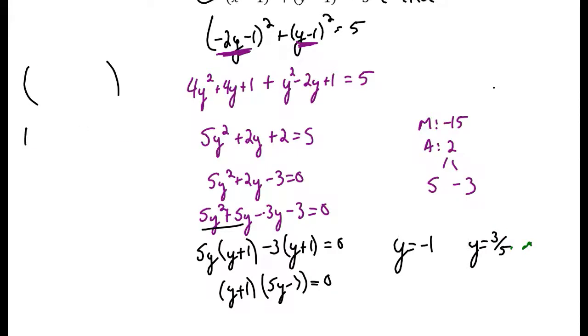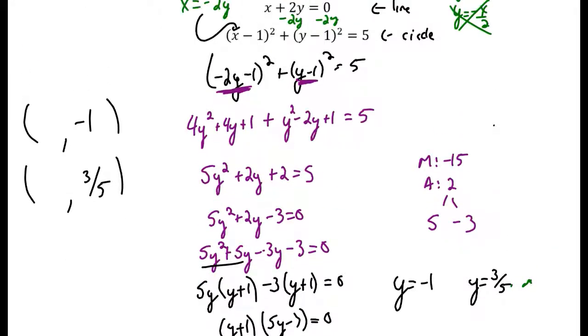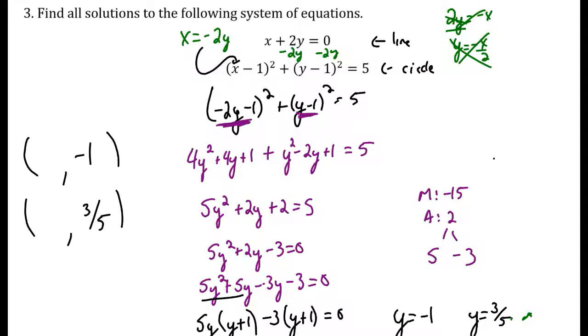When we solve a system of equations like this, we're looking for the point of intersection. I know the y values this time. Those are my y values. I now need my x values. It's a little different because I have y and I'm finding x. Well, x is negative 2 times y. So, if I plug in negative 1, I get x equals 2. Negative 2 times negative 1 is 2. And when I plug in 3 fifths, I get negative 6 fifths because I'm multiplying that by negative 2.